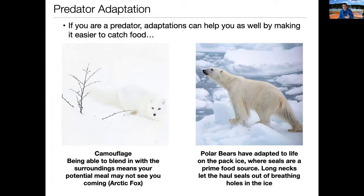Predators themselves also adapt to make them more successful at catching prey. Here you see two examples, both from the Arctic. On the left is the Arctic fox. They've used the camouflage adaptation — where for the frog it protected it from being eaten, in this case the camouflage of the fox allows it to blend into the background so that the things it's hunting don't see it coming. That is an adaptation used for a completely different purpose, but it's to the Arctic fox's advantage not to be seen, and it allows it to survive.